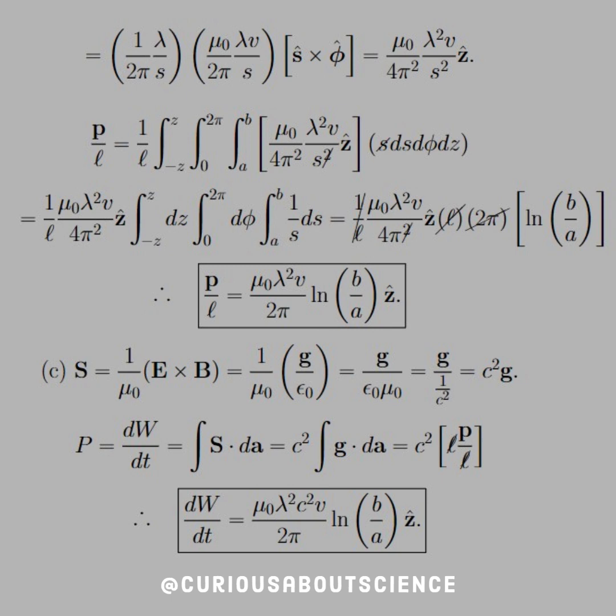Now, we know that power, which is related to the change in work over change in time, but that's also equal to the integral of the Poynting vector over some differential area. So we plugged it in, we get C squared G dot dA. But we know that the area integral of G dot dA is equal to L times the momentum per unit length, since we already did the integral of G. So now we just need to times it by the length, since our dA is perpendicular. And you see that it was canceled, and we're left with C squared P. So we see again that dW/dt is equal to mu naught lambda squared C squared V over 2 pi ln of B over A.